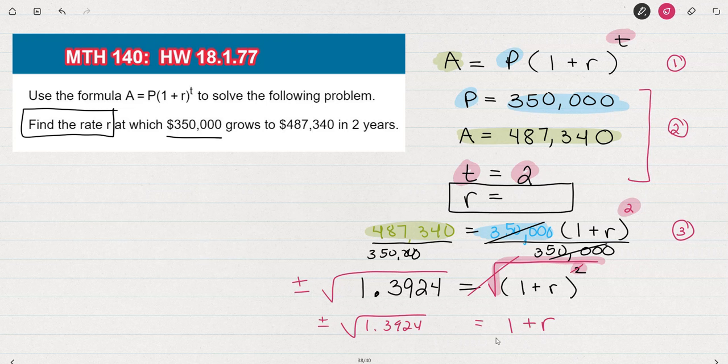So to solve for the interest rate, I'm going to subtract 1 from both sides. And I'd get that the rate is negative 1 plus or minus the square root of 1.3924.